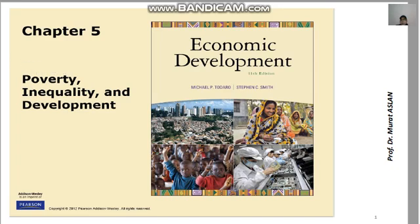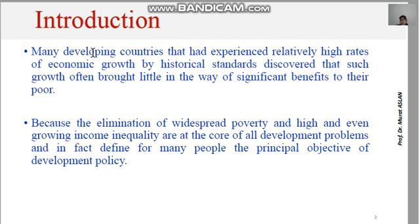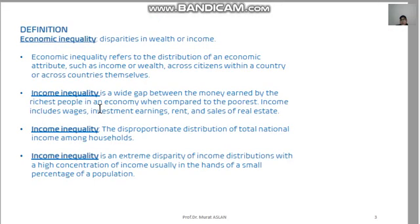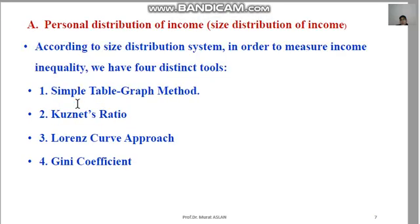Hello everybody, this is Part Two of Chapter Five. In Part One we covered the definitions of inequality and poverty. We also noted that there are two distinct ways of measuring income inequality: the personal distribution approach and the functional approach. Under the personal distribution approach, there are four distinct methods: simple graphing and tabling, the Kuznets ratio, the Lorenz curve, and the Gini coefficient.